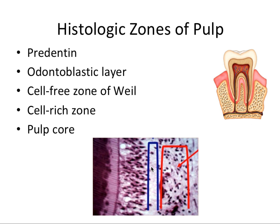Right inside the odontoblastic layer is the cell-free zone of Weil — a zone where there are almost zero nuclei present because there are no cells there. In this region you'll often see nerve bundles. Right inside that is the cell-rich zone, where we have a lot more nuclei. And then inside that is the pulp core, the central part of the pulp.